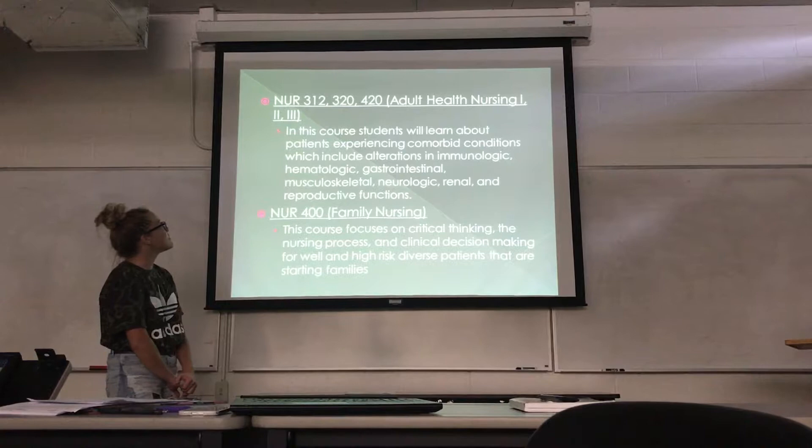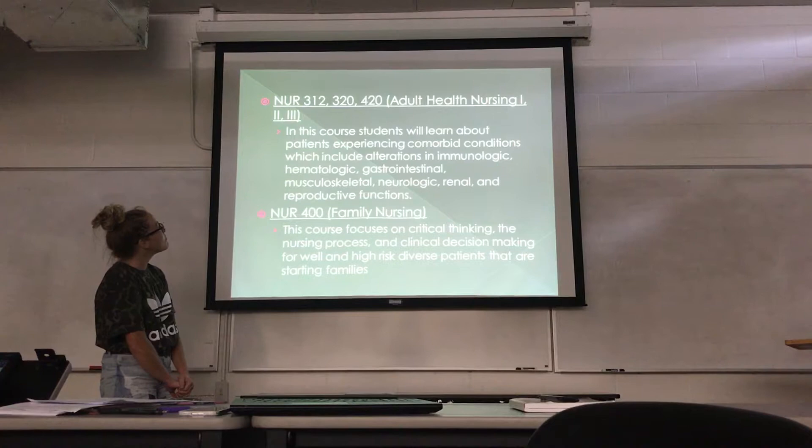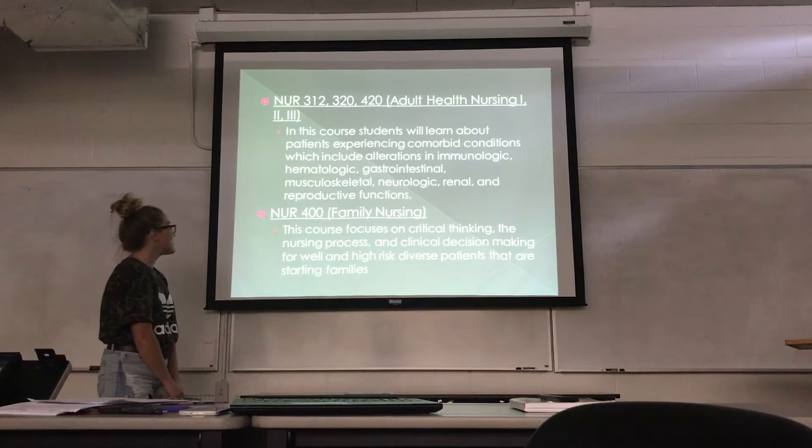Nursing 312, 320, and 420 are adult health nursing 1, 2, and 3. In these courses, students learn about patients experiencing comorbid conditions, including alterations of the immunologic, hematologic, gastrointestinal, musculoskeletal, neurologic, renal, and reproductive functions.